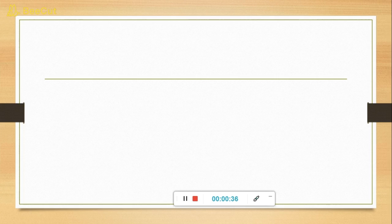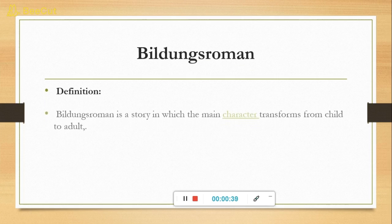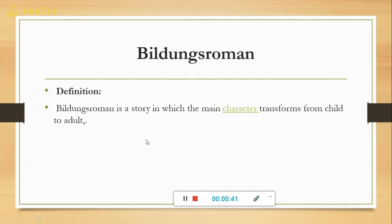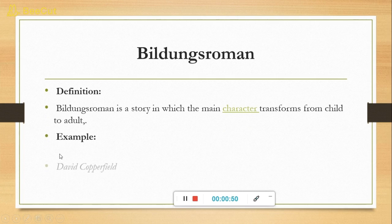Bildungsroman is a story in which the main character or the protagonist transforms from child to adult. The best example of Bildungsroman is David Copperfield. The protagonist, David Copperfield, develops from child to adult, and during this period of development, he faces hardship and suffering and develops certain qualities of perseverance, patience, and honesty.